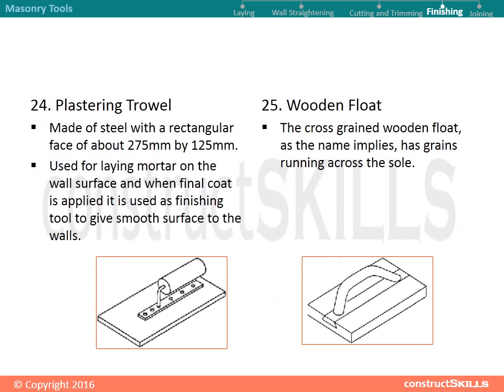Finishing tools: plastering trowel. Made of steel with a rectangular face of about 275 mm by 125 mm, it is used for laying mortar on the wall surface. When the final coat is applied, it is used as a finishing tool to give a smooth surface to walls.